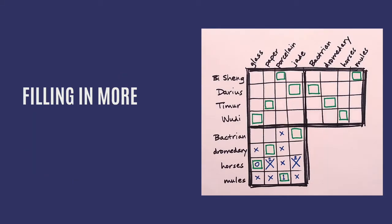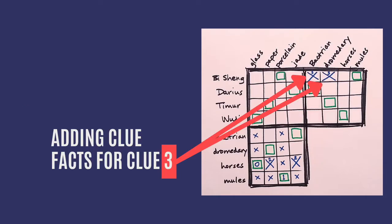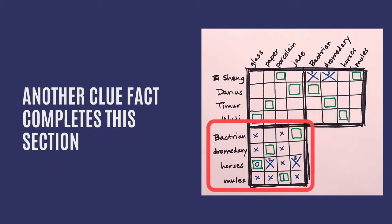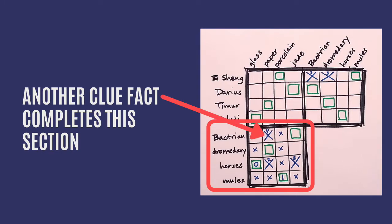We need to keep selecting clue facts until there are enough for the solver to find the solution. Let's put a couple of x's up here. No for Bisheng using dromedary or Bactrian camels. This lower section is almost filled in. We just need one more no in the right place. An x for Bactrian and paper, that should do it. And when we fill the rest in, it does.